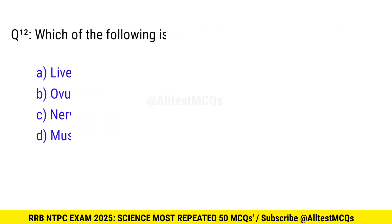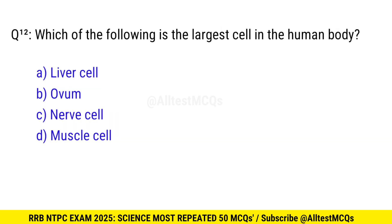Question 12. Which of the following is the largest cell in the human body? Correct option is B, ovum.